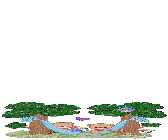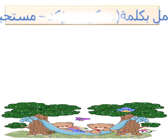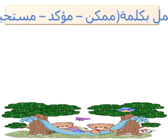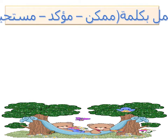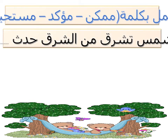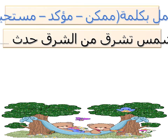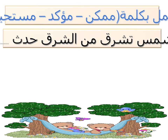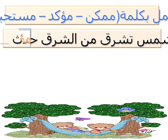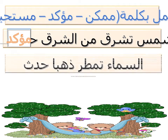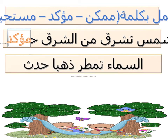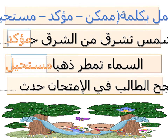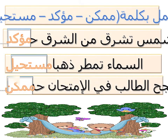تعالوا نشوف تدريب. بكلمات ممكن أو مستحيل أو مؤكد: الشمس تشرق من الشرق - حدث مؤكد. السماء تمطر ذهبًا - حدث مستحيل. ينجح الطالب في الامتحان - حدث ممكن.